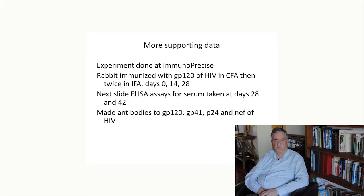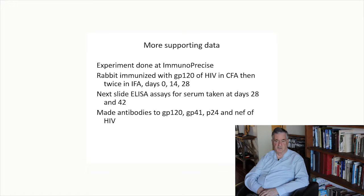We have additional supporting data from an experiment done at Immunoprecise Antibodies in Victoria. Rabbits were immunized with GP120 of HIV in complete Freund's adjuvant and then twice in incomplete Freund's adjuvant on days 0, 14, and 28. ELISAs for serum taken at days 28 and 42 showed that the rabbit made antibodies to GP120, GP41, P24, and NEF — all HIV antigens. So even though immunized with only one HIV antigen, it made antibodies to all four.